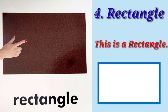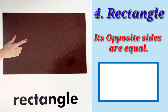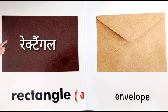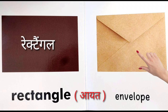Rectangle. This is a rectangle. It has four sides. Its opposite sides are equal. Rectangle means ayaq. The envelope is shaped like a rectangle.